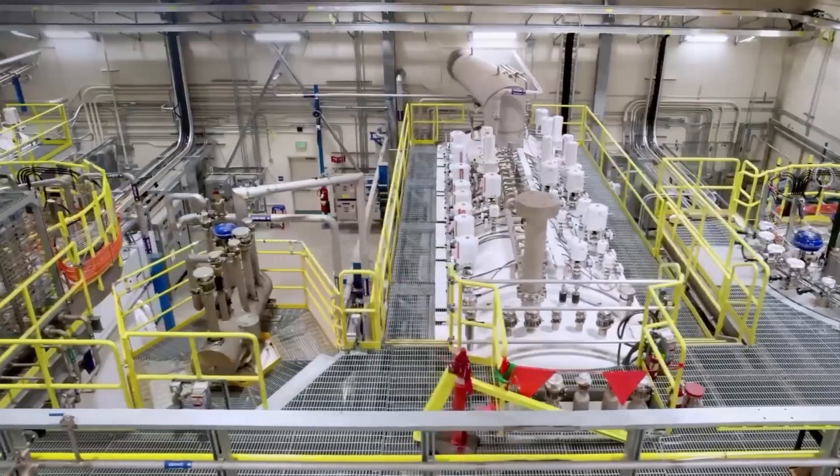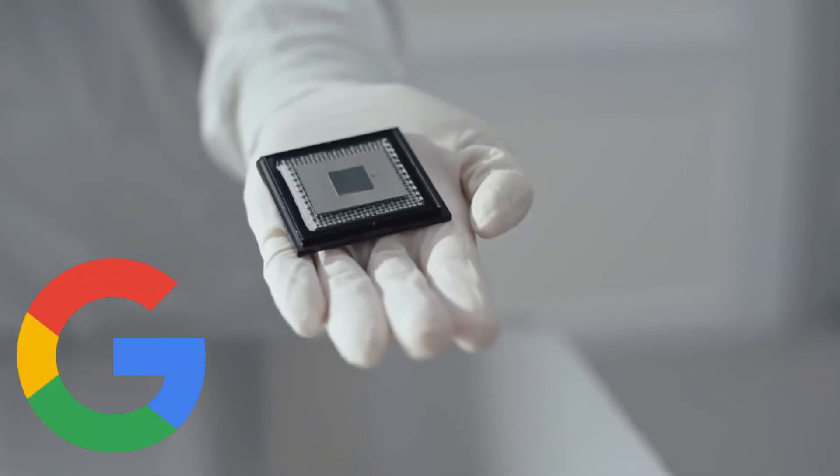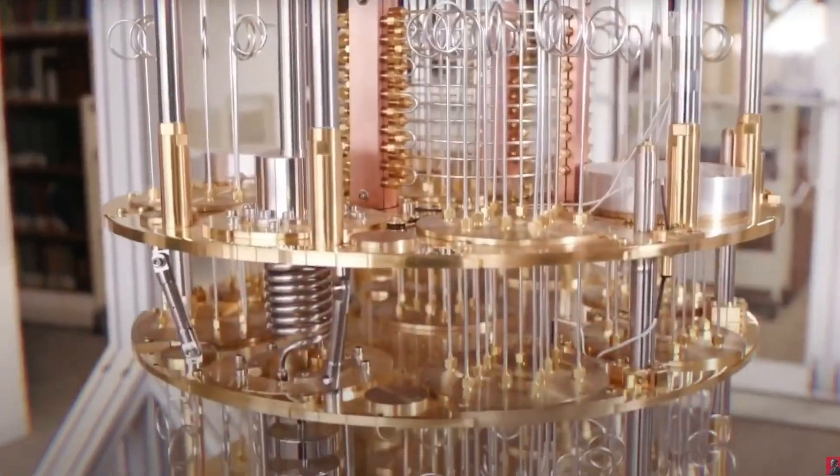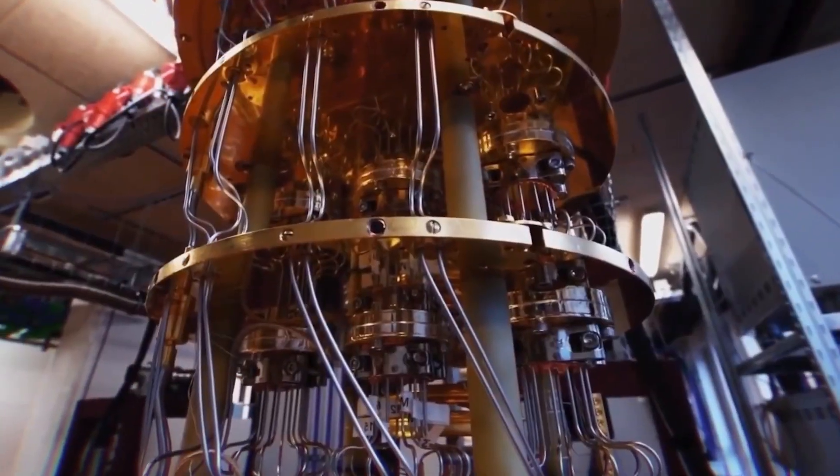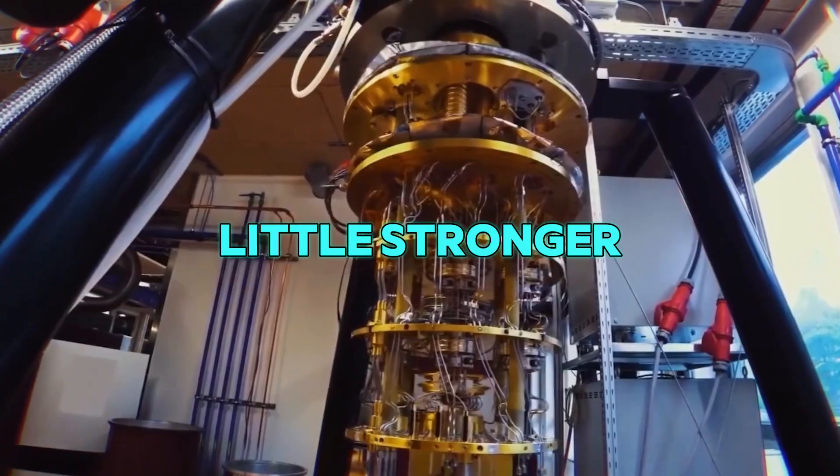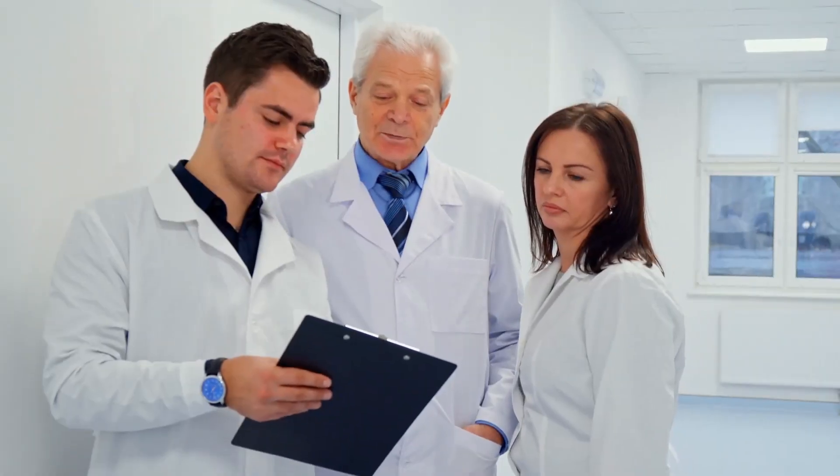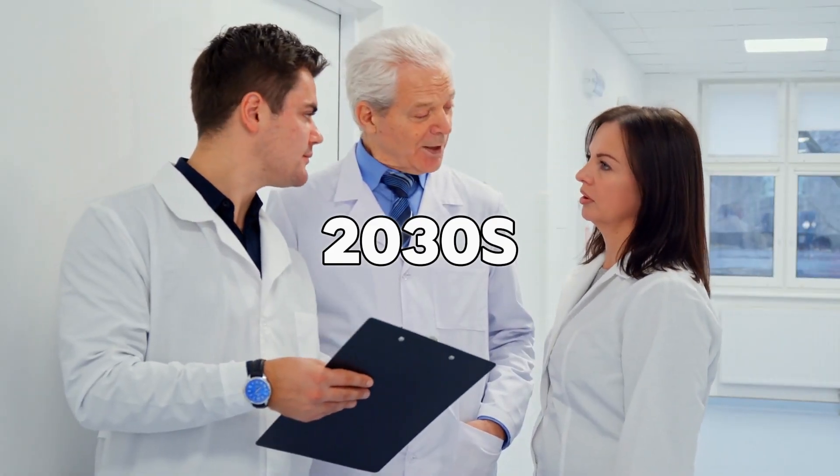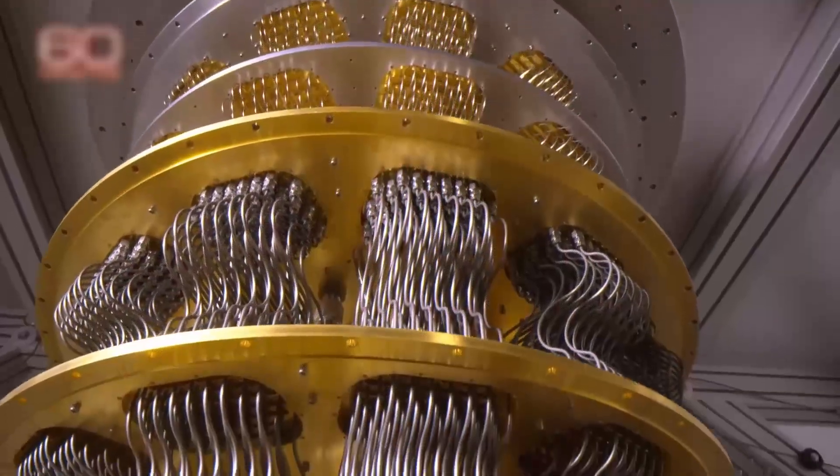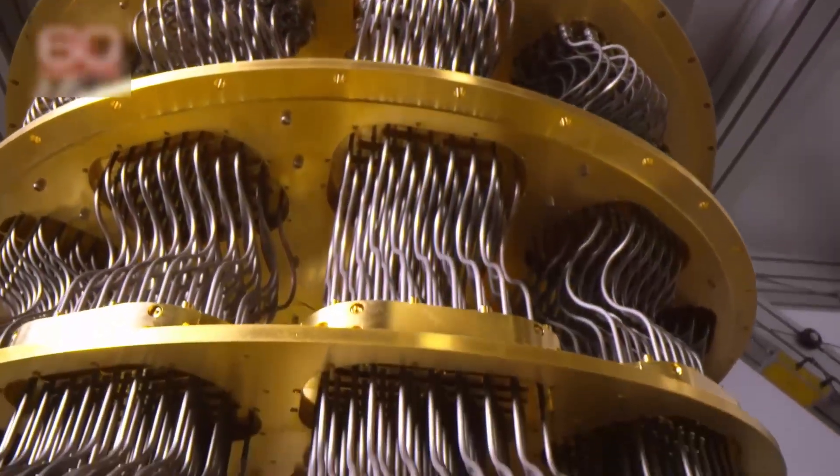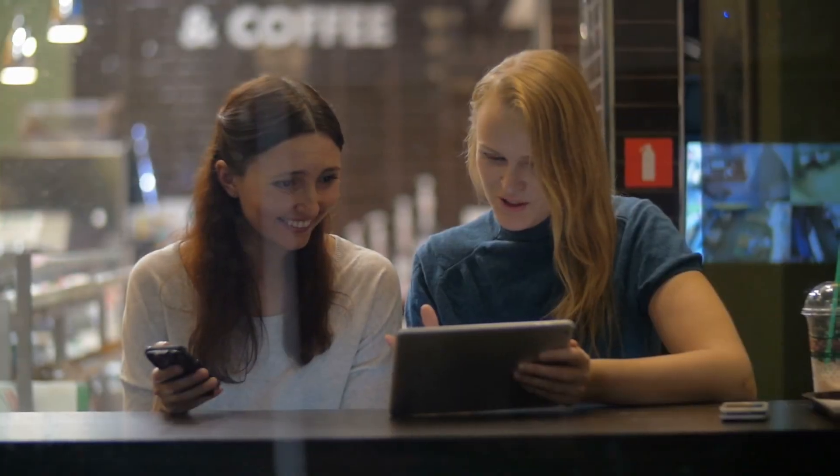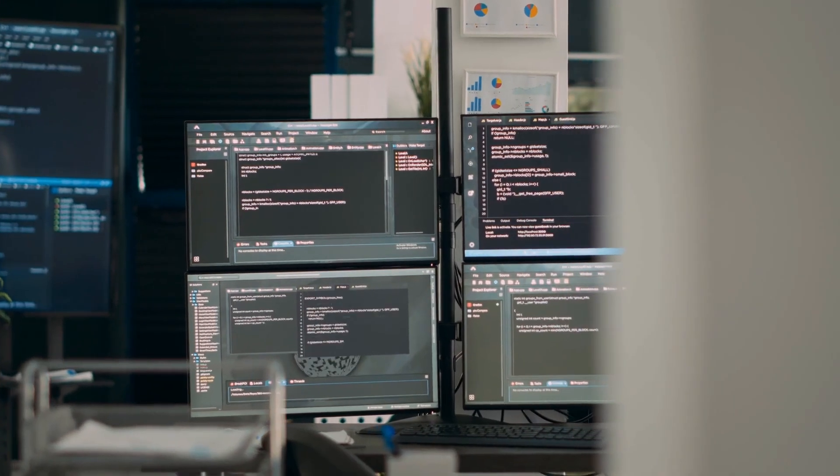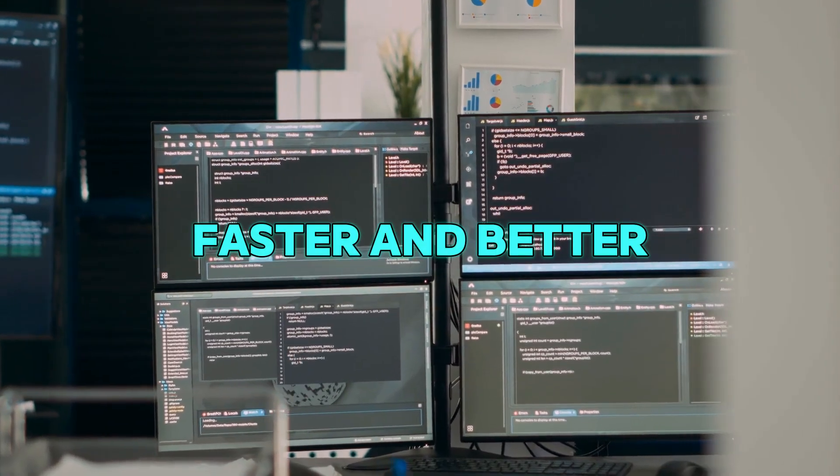Even with all these hurdles, the future looks bright. Google's Sycamore chip already showed the world that quantum computers can do things regular ones can't. Every year, these machines get a little stronger and a little less error-prone. Experts think that by the early 2030s, maybe when you're all grown up, quantum computers will start showing up in places like hospitals, banks, and schools. They won't replace your tablet or phone, but they'll work behind the scenes, making life faster and better.